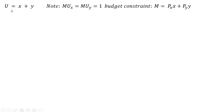Here is our perfect substitutes utility function. Utility is a function of good x plus good y. We're going to note here that the marginal utility of good x and the marginal utility of good y are just one, and that one is just the coefficient on x and y.